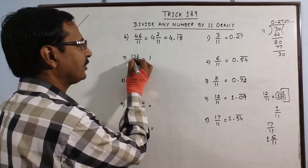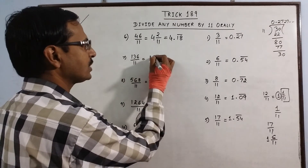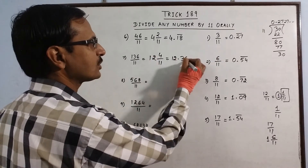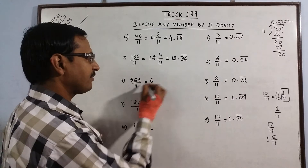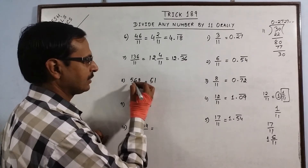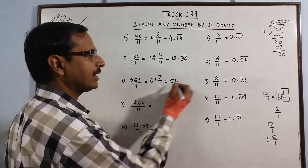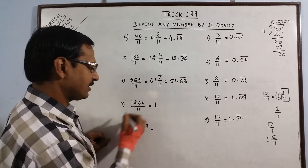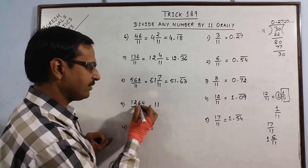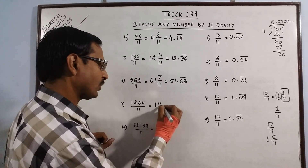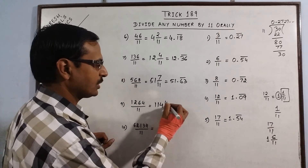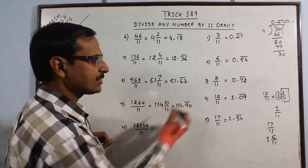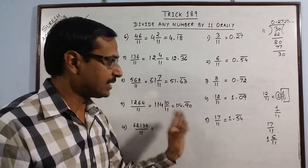Working through more examples: for a number where 11 ones are 11, remainder 2 gives 26 next; 11 twos are 22, leaving 4, so 4/11 gives 4 times 9 = 36 repeating. Another: 11 fives are 55, remainder 7; 7 times 9 is 63, so 63 repeats. Another: remainder 5 gives 4/11, yielding 51 before decimal, 63 repeating. For a case with remainder 10: 10 times 9 is 90, so 90 repeats, giving the decimal representation as 114.909090 and so on.